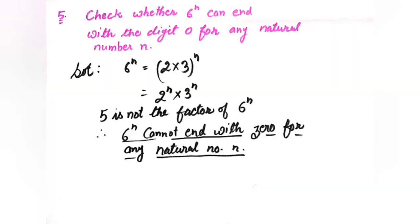Next question: check whether 6ⁿ can end with the digit 0 for any natural number n. The solution: 6ⁿ can be written as (2 × 3)ⁿ = 2ⁿ × 3ⁿ, because 2 and 3 are the factors of 6. A natural number can end with 0 only if its factors include both 2 and 5. But the factors of 6ⁿ are only 2ⁿ × 3ⁿ, so 5 is not a factor of 6ⁿ. Therefore, 6ⁿ cannot end with 0 for any natural number n.